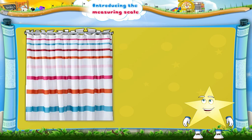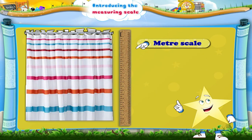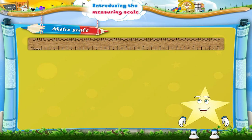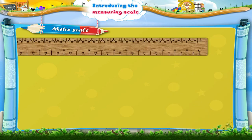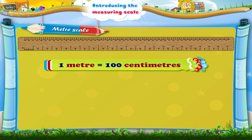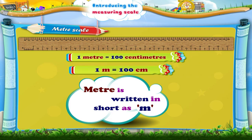Hey! Why have you brought that cloth? Oh Starry, we cannot measure the length of cloth using a measuring scale. We need a meter scale for measuring longer lengths. Look at this meter scale, Starry. Observe, the last number shown here is 100, so there are 100 centimeters on it. So 1 meter contains 100 centimeters. If we write meter in short as M, then 1 meter equals 100 centimeters.